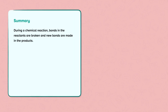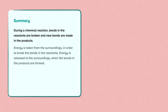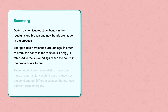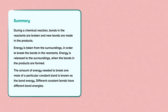During a chemical reaction, bonds in the reactants are broken and new bonds are made in the products. Energy is taken from the surroundings in order to break the bonds in the reactants. Energy is released to the surroundings when the bonds in the products are formed. The amount of energy needed to break one mole of a particular covalent bond is known as the bond energy. Different covalent bonds have different bond energies.